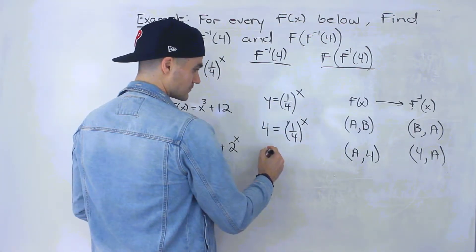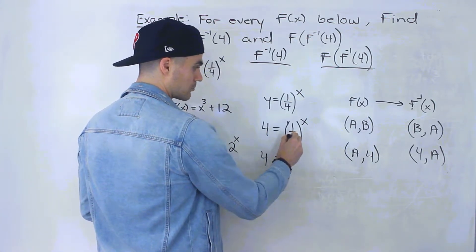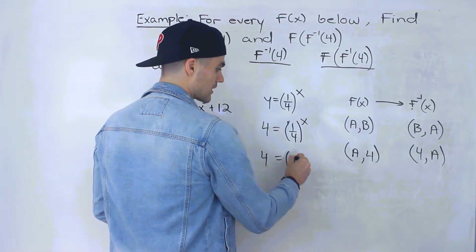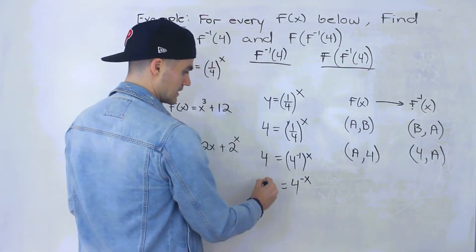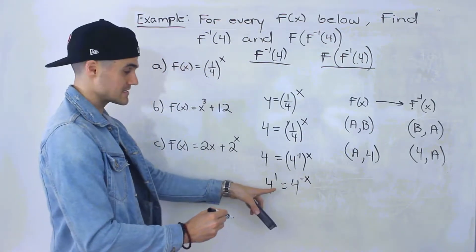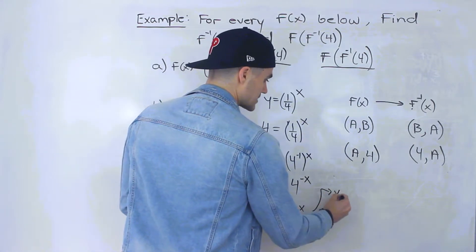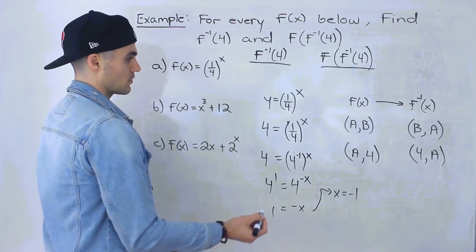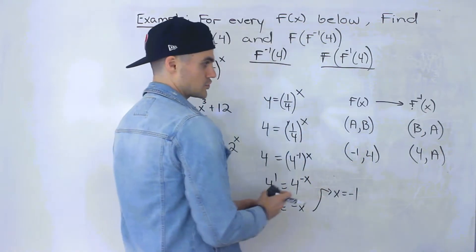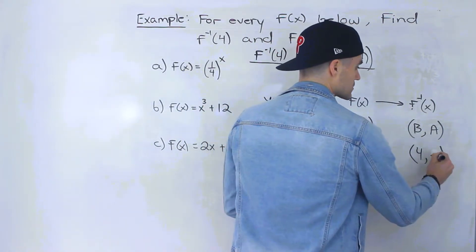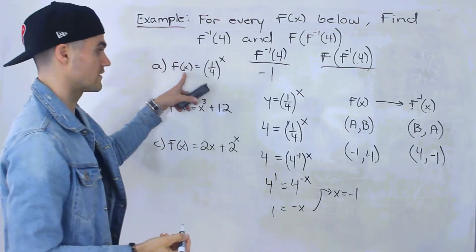It's pretty easy to solve here. We bring the 4 up so it becomes 4 to the power of negative 1 to the power of x. Multiplying the exponents gives us 4 to the power of negative x equals 4 to the power of 1. Since the bases are the same, negative x must equal 1, which means x equals negative 1. So the answer is negative 1 — that's f inverse of 4 for this first function.